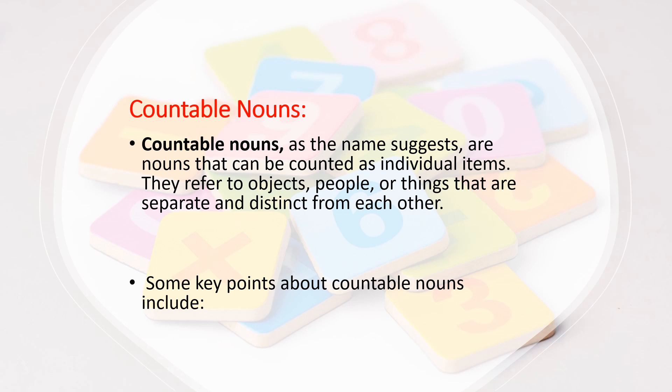Countable nouns, as the name suggests, are nouns that can be counted as individual items. They refer to objects, people, or things that are separate and distinct from each other. Some of the key points about countable nouns include: